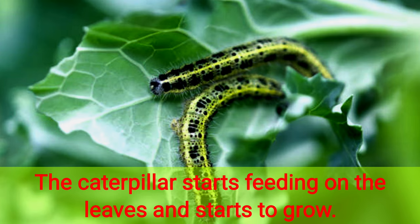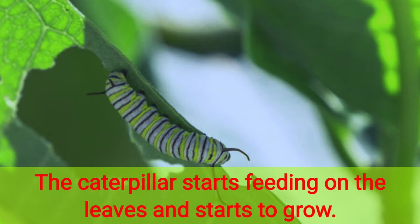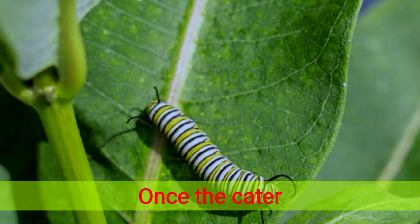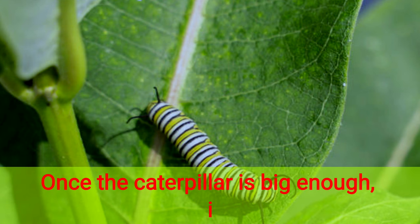The caterpillar starts to grow and sheds its skin several times so that it can grow. Once the caterpillar is big enough, it stops eating.